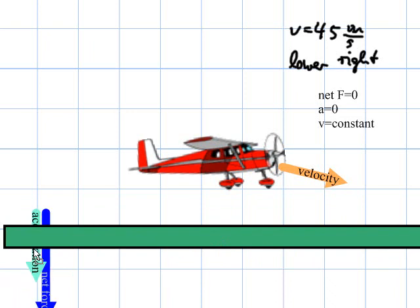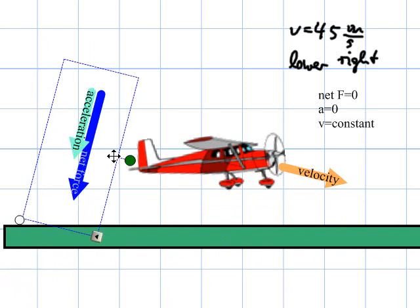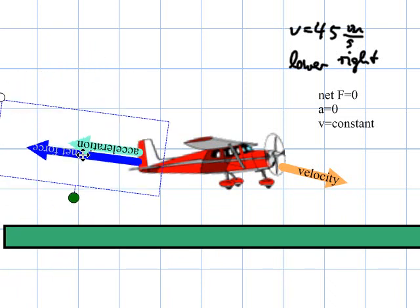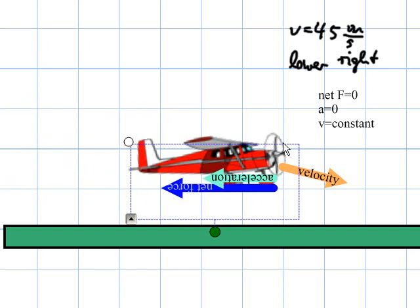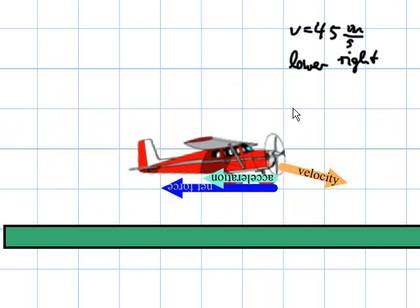She may want to slow down before she gets there. So she reduces the thrust, and it will reduce her velocity in the horizontal. So perhaps this one here will be 30 meters per second, just as her takeoff speed was earlier.